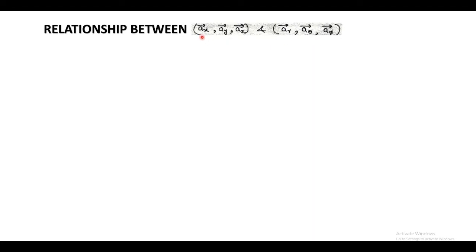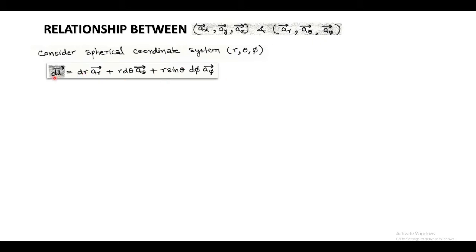After this, we can also relate unit vectors corresponding to Cartesian and spherical coordinate systems. Unit vectors in the Cartesian system are unit vector x, unit vector y and unit vector z, and in the spherical coordinate system, unit vectors are a_r, a_theta, a_phi. Now, we consider the differential length in the spherical coordinate system, denoted by dl vector equals to dr unit vector r plus r d theta unit vector theta plus r sin theta d phi unit vector phi. From here, we have to find unit vector r, unit vector theta, and unit vector phi.